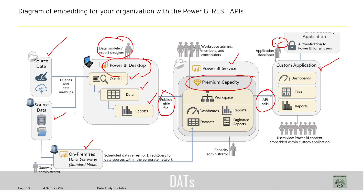The connection happens through API code — there is no more embedding using iframe. That is one important point to be noted. From this architecture diagram we have seen how embedding for our organization works with the Power BI REST APIs.